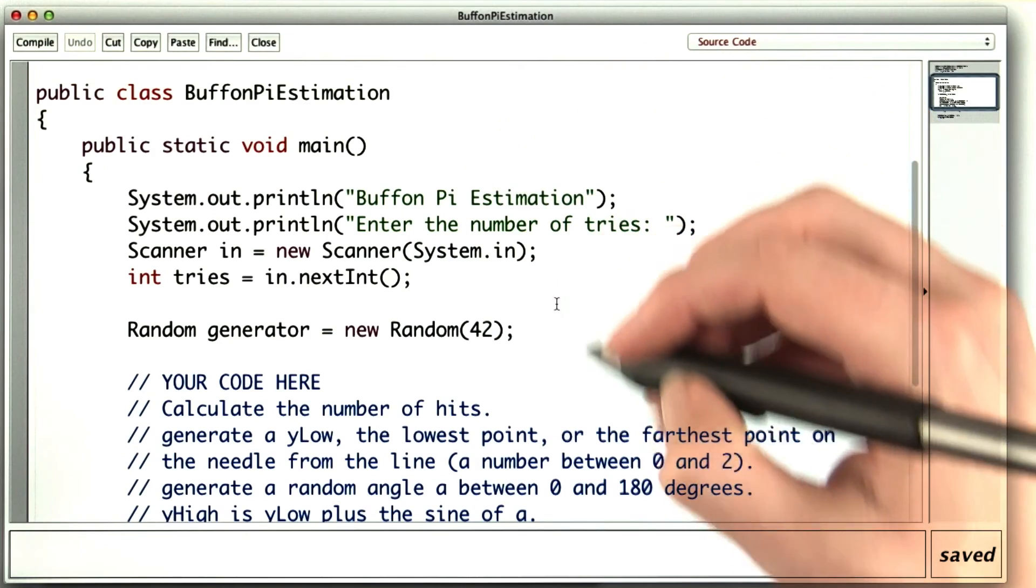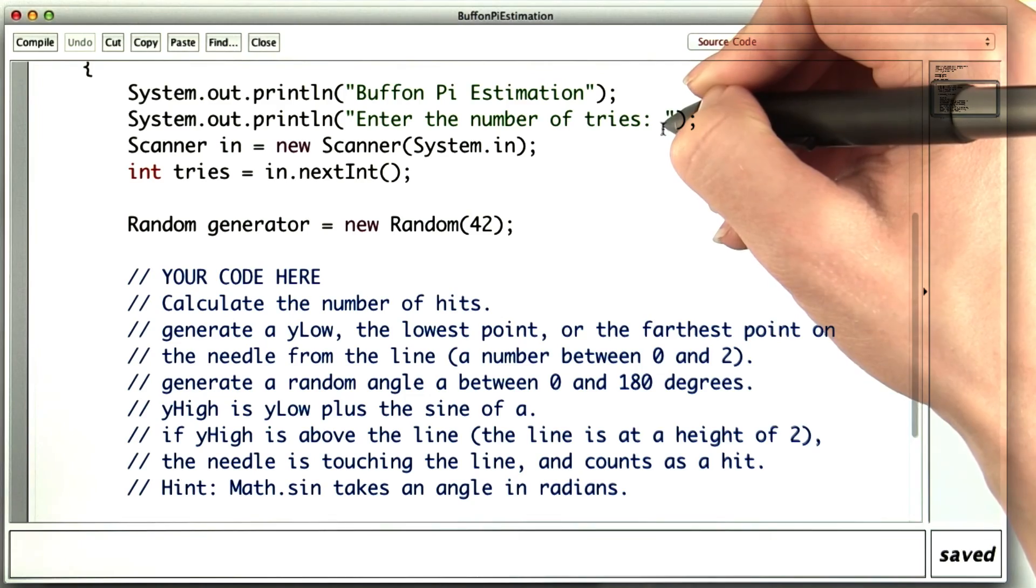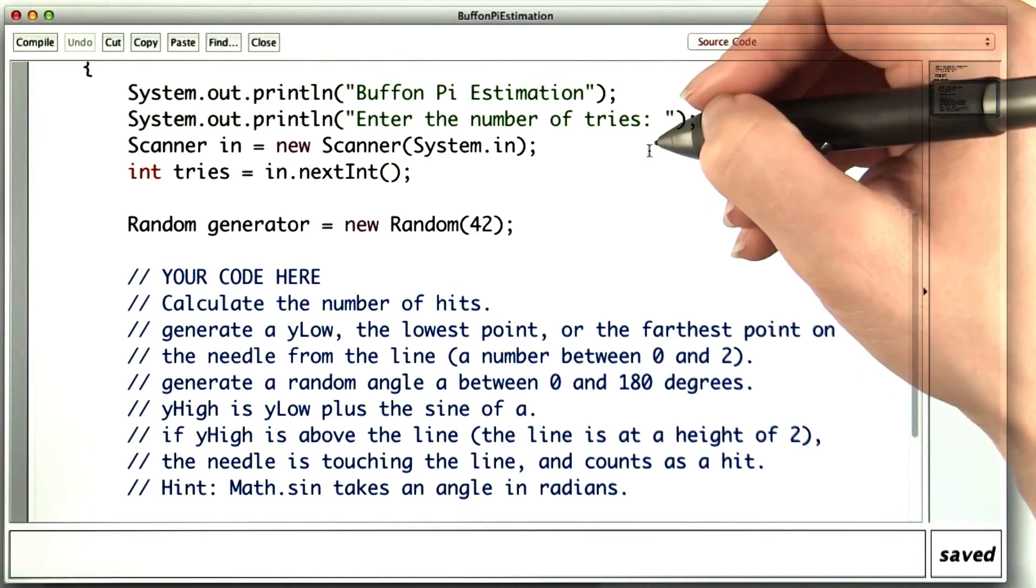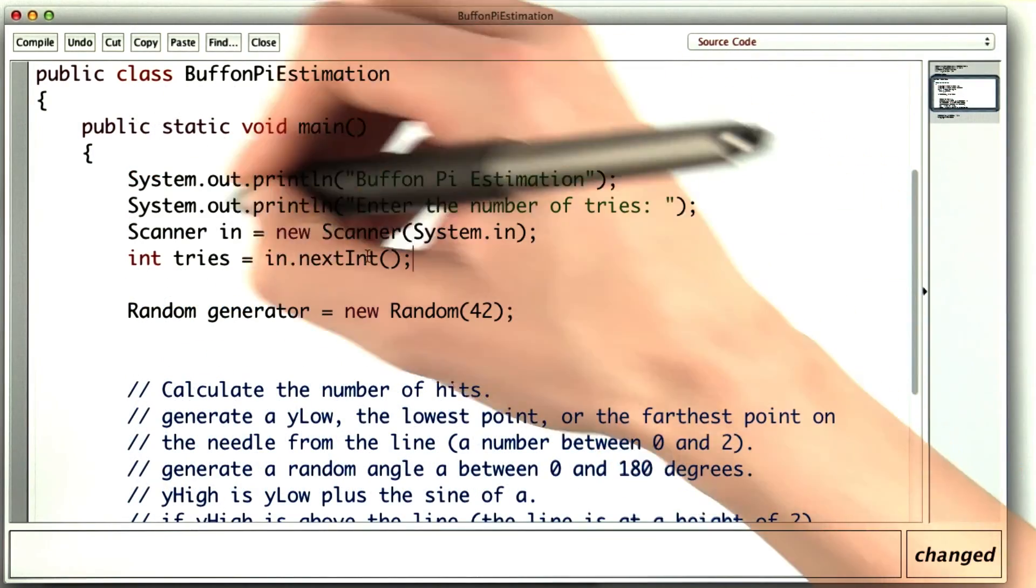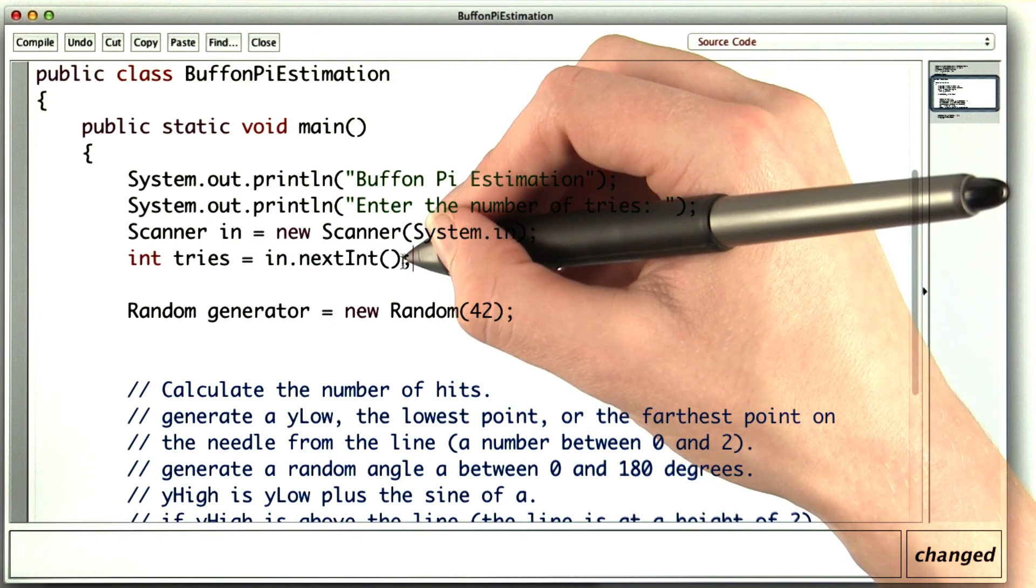Here's the start of the program to do this. And when you put in the number of tries, I recommend using a large number, at least 30,000. When you write this code, make sure to use the variable tries to control how many times you drop the needle.